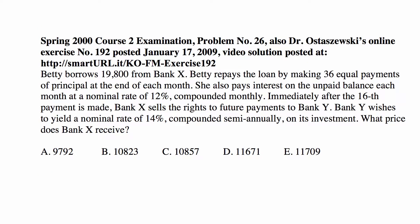This is the problem for today. Betty borrows $19,800 from Bank X. Betty repays the loan by making 36 equal payments of principal at the end of each month. She also pays interest on the unpaid balance each month at a nominal rate of 12% compounded monthly. Immediately after the 16th payment is made, Bank X sells the rights to future payments to Bank Y. Bank Y wishes to yield a nominal rate of 14% compounded semiannually on its investment. What price does Bank X receive?